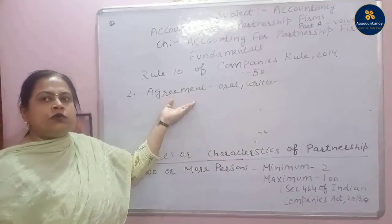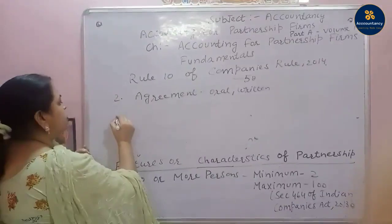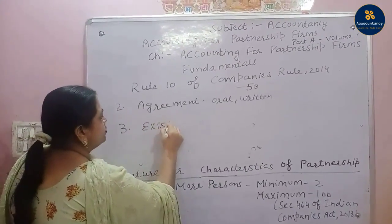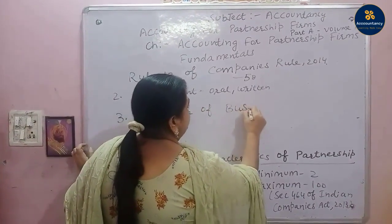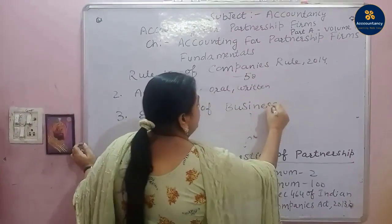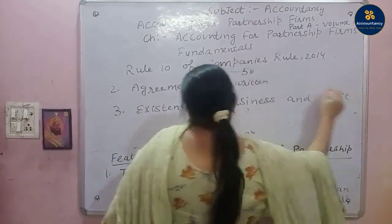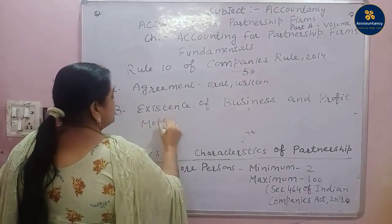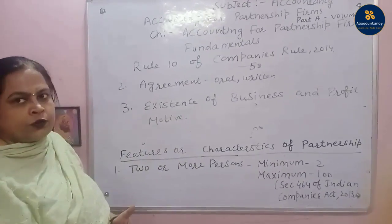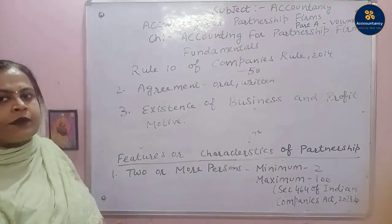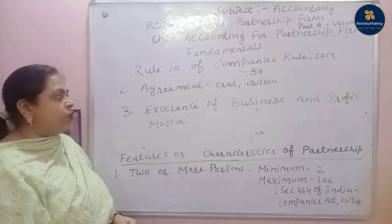The agreement is a document in which all the rules and regulations of the partnership are written. The third feature is existence of business and profit motive. For example, if two persons, Ram and Sham, have purchased a plot of land, that is not a partnership — that is co-ownership. There should be existence of business for it to be a partnership.